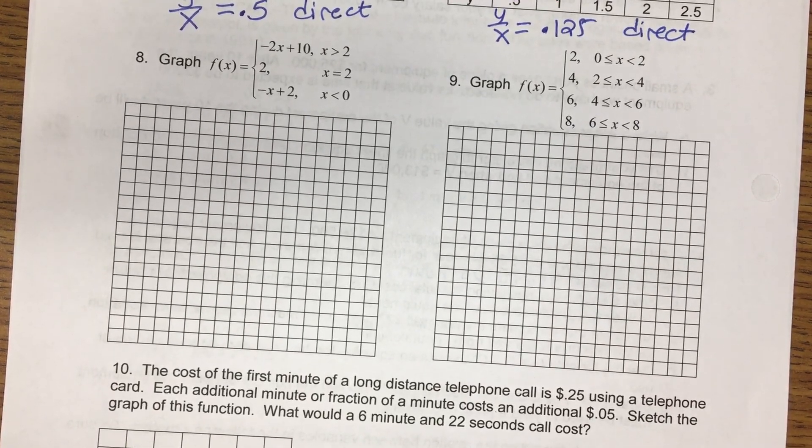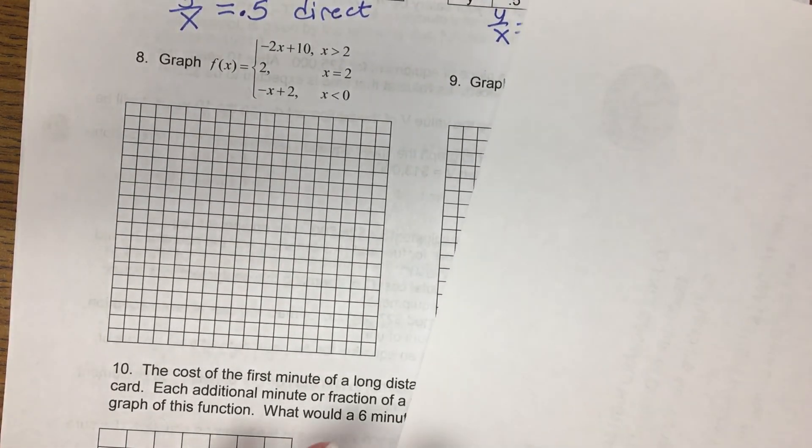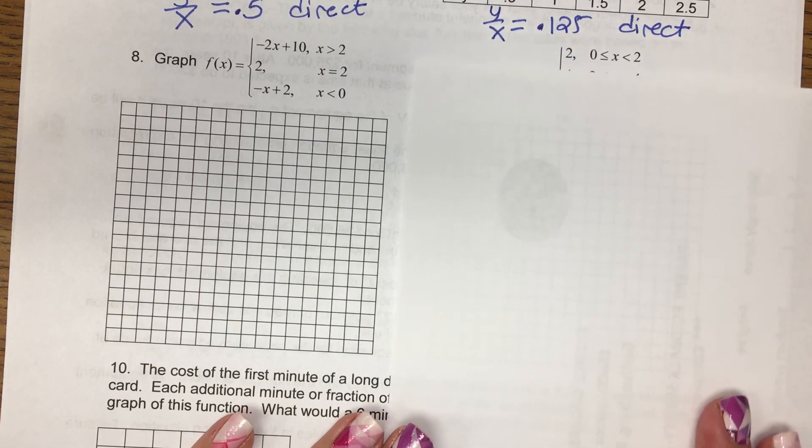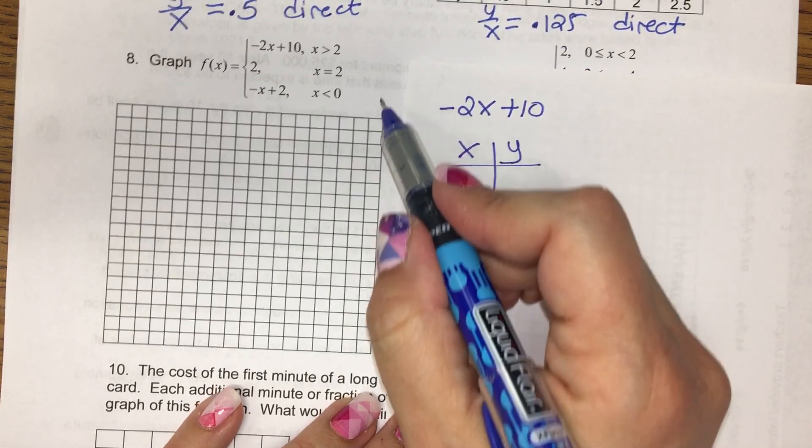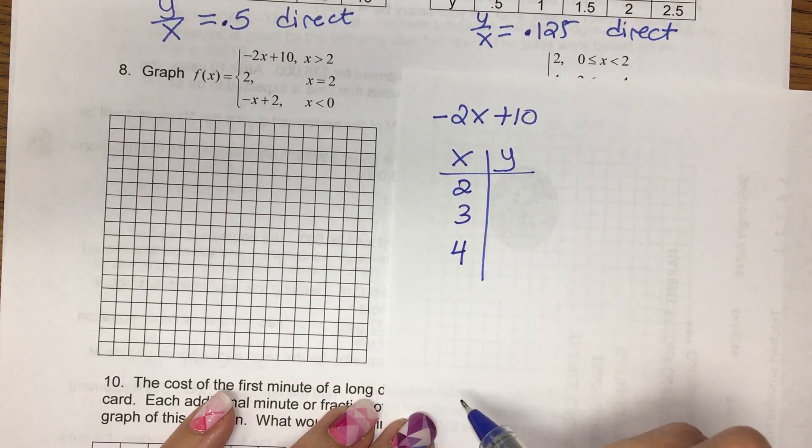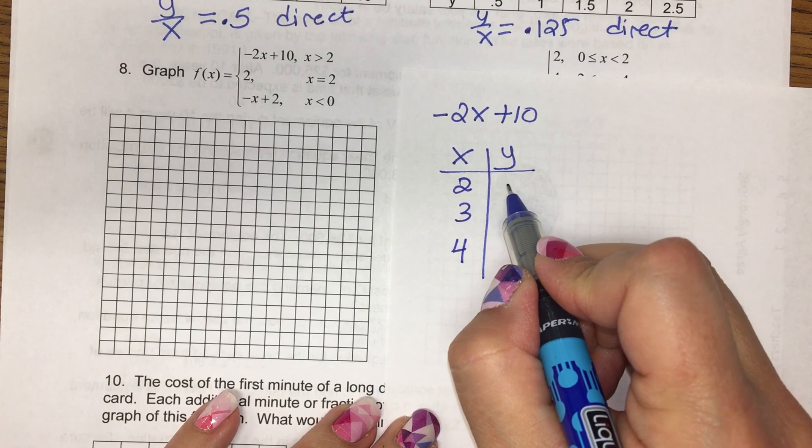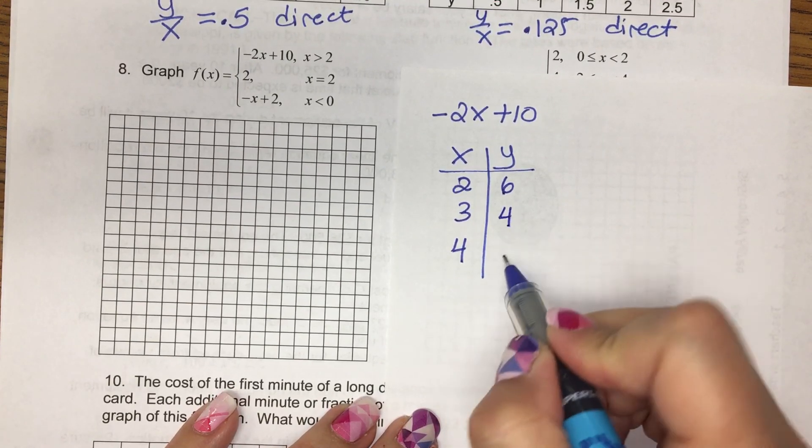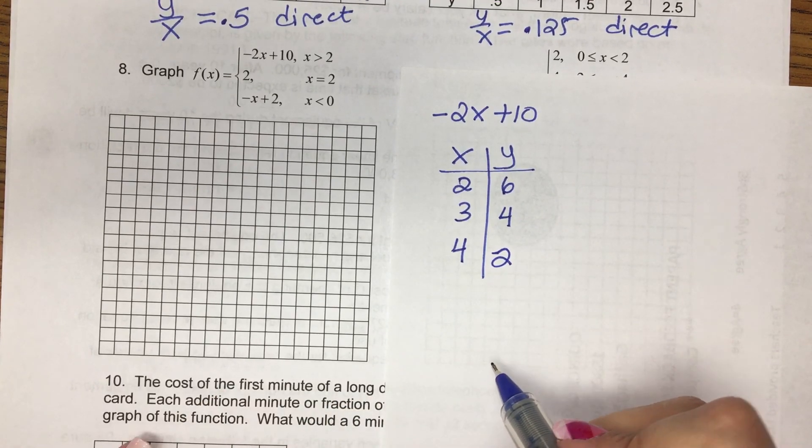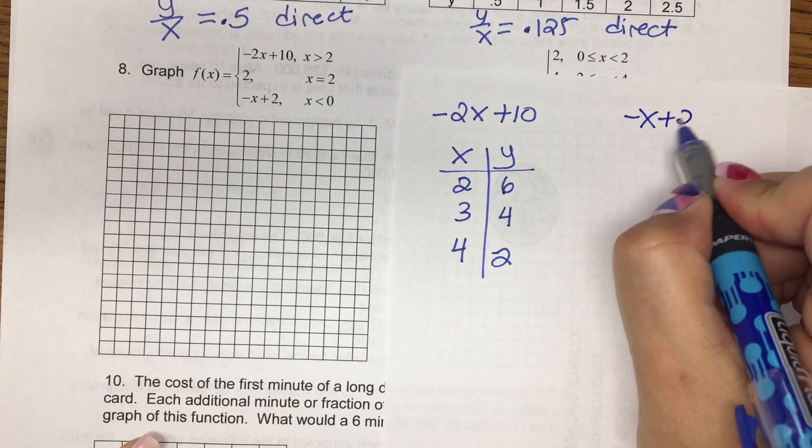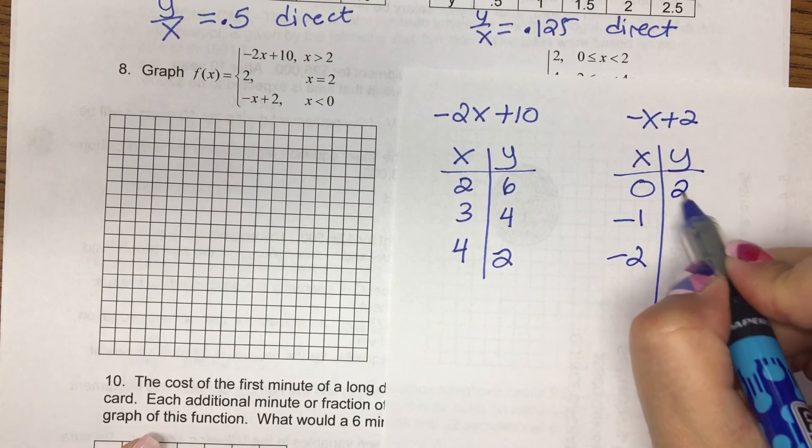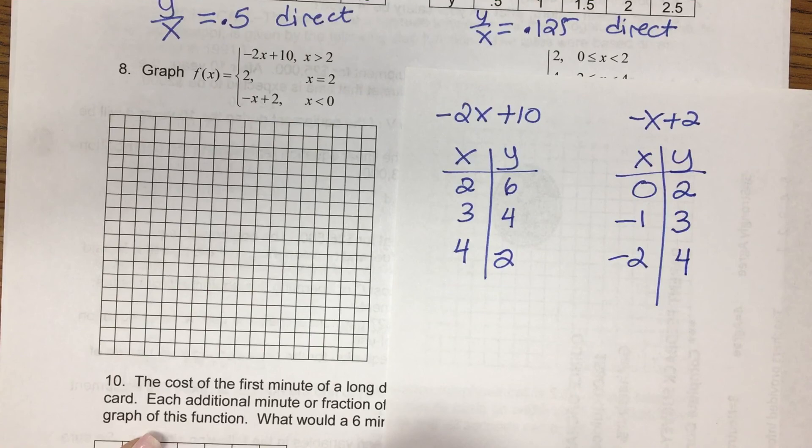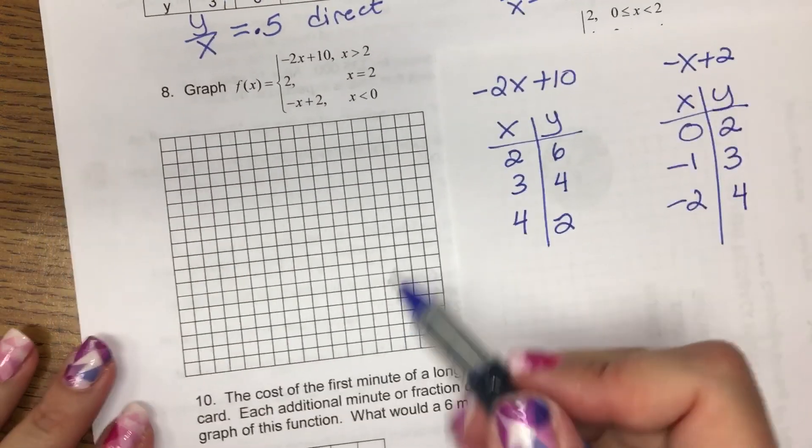Okay. For number eight, I need to make some tables so that I can graph that function. You can use your calculator, but I'm going to write them out so you can see my thought process. Negative 2x plus 10, I want to use x values 2 and greater. So let's do 2, 3, and 4. And then plug them in. So let's see. We get negative 4 plus 10, negative 6 plus 10, negative 8 plus 10. Then the negative x plus 2 part is every x less than 0. So I'm going to do 0, negative 1, negative 2. Plug those in. You can use your calculator to plug them in. That's fine.